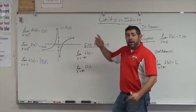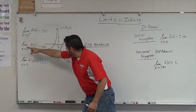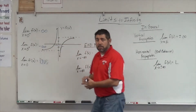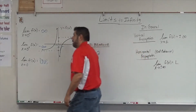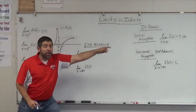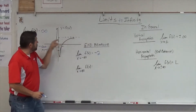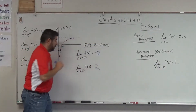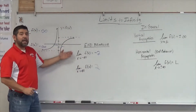As x goes all the way out to negative infinity, what is y doing? As x gets bigger and bigger in the negative direction, y is approaching negative 2 — there's a horizontal asymptote, and y is approaching negative 2. As x goes to positive infinity, y gets closer to 2. So the limit as x approaches infinity of f(x) is 2. This is the end behavior — what is happening at the ends of the graph.